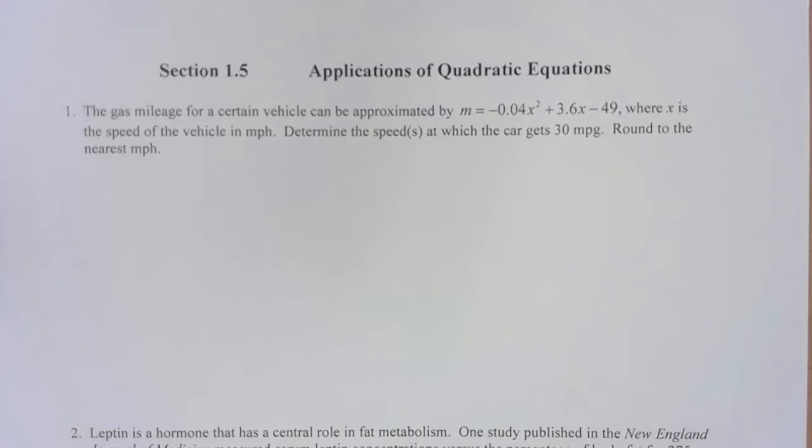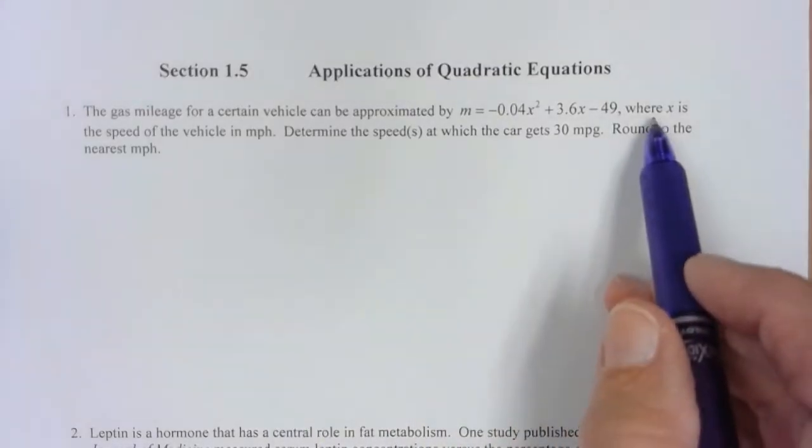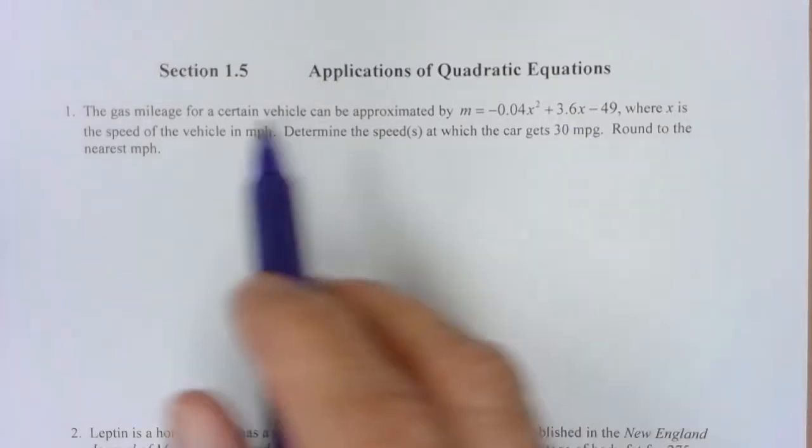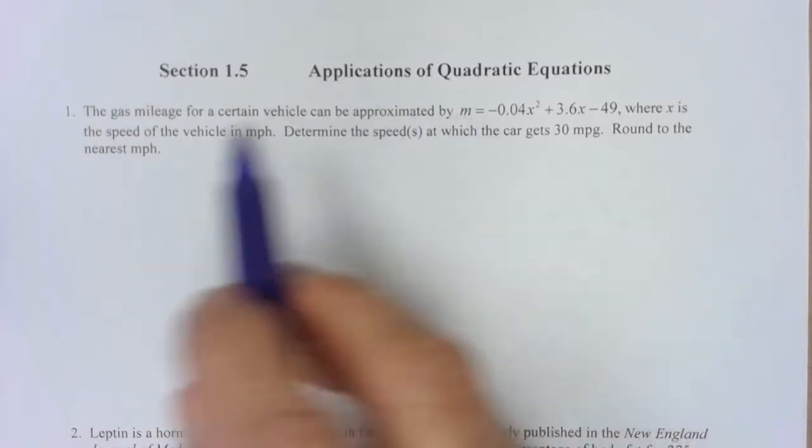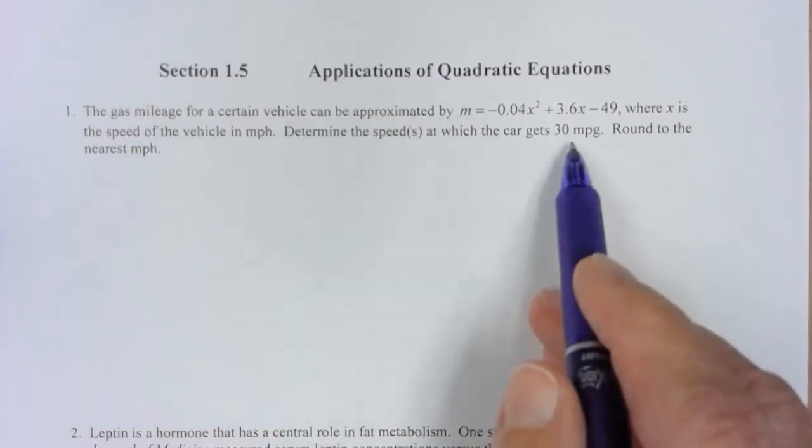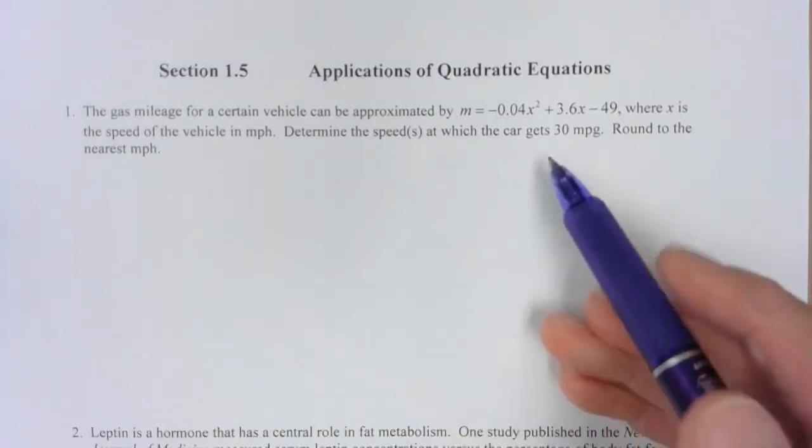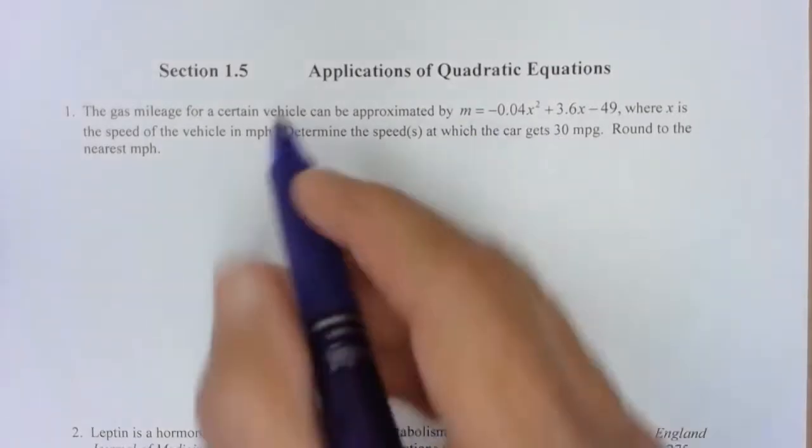Determine the speed or speeds at which the car gets 30 miles per gallon, round to the nearest mile per hour. Well, x in this particular equation is the speed of the vehicle in miles per hour. The m refers to the gas mileage, which would be that 30 mpg, so I need to substitute 30 in for m.